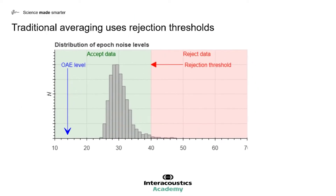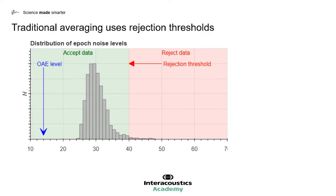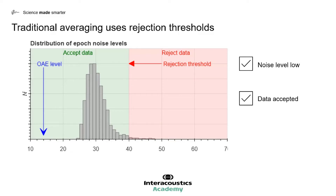One of the ways traditional averaging improves test times is to use rejection thresholds. Here you can see a result of an OAE from a quiet adult patient. You can see that the noise distribution is mainly centered around 30 dB, and the rejection level has been set at 40 dB. Therefore only a few of the noisy data points have been rejected above this 40 dB level. This means the noise level is low and we have lots of accepted data, resulting in a test time which is relatively fast.